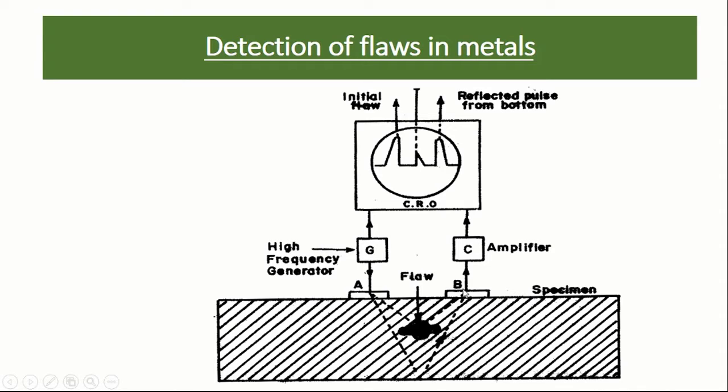The reflected beam is recorded by using cathode ray oscilloscope. The time interval between the initial and flaw echoes depends on the range of flaw. By examining echoes on CRO, flaws can be detected and their sizes can be estimated.